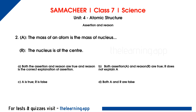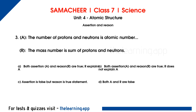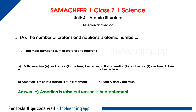Assertion: The mass of an atom is the mass of the nucleus. Reason: The nucleus is at the center. Correct answer is A — both assertion and reason are TRUE, and reason is the correct explanation of assertion. Assertion: The number of protons and neutrons is the atomic number. Reason: The mass number is the sum of protons and neutrons. Correct answer is C — assertion is false but reason is a true statement.